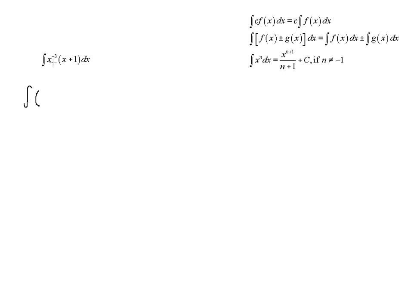So x to the negative third times x to the first. Remember, with like bases, we add the exponents, so we get x to the negative two in the first case. And then x to the negative third times one is just plus x to the negative third.